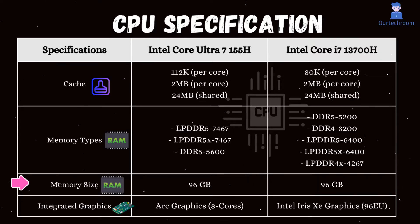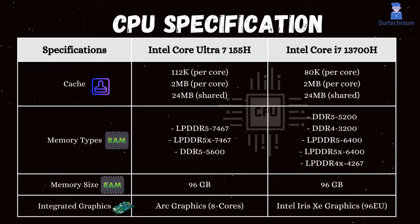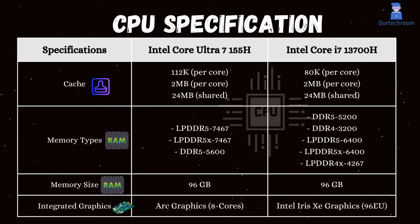Both processors support up to 96GB of memory. They also support DDR5 and LPDDR5 memory types, but the Ultra 7 155H allows for a higher memory frequency.